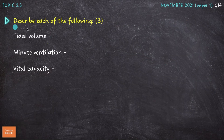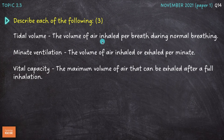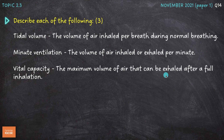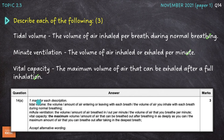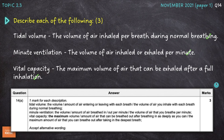Next question: describe each of the following terms — tidal volume, minute ventilation, and vital capacity. Tidal volume is the volume of air inhaled per breath during normal breathing. Minute ventilation is the volume of air inhaled or exhaled per minute. Vital capacity is the maximum volume of air that can be exhaled after a full inhalation. The points included here are very close to the mark scheme responses.